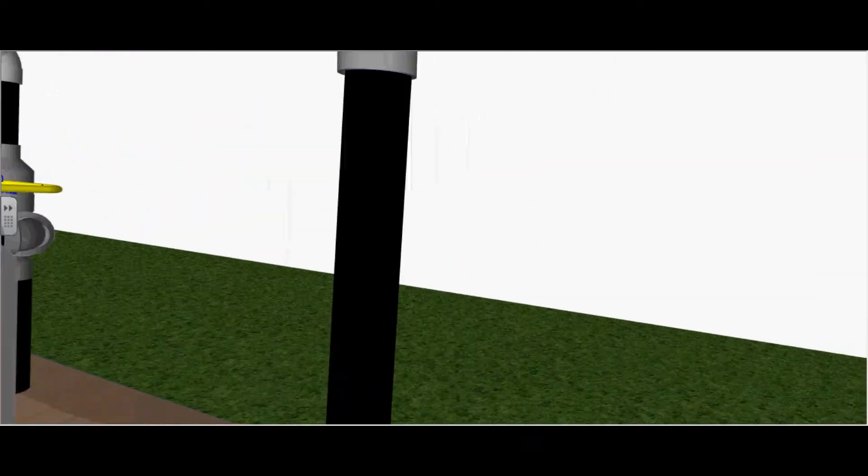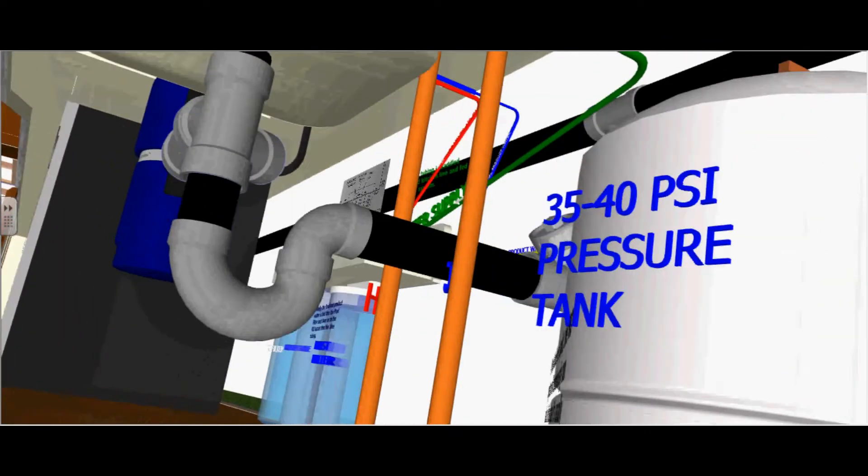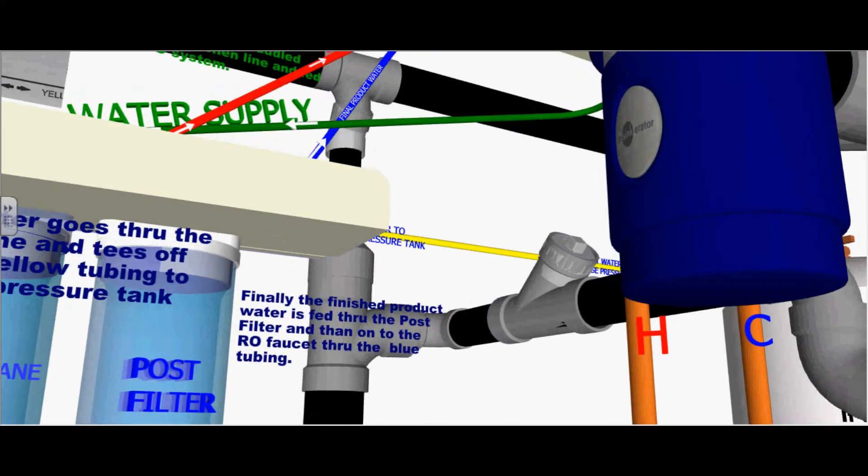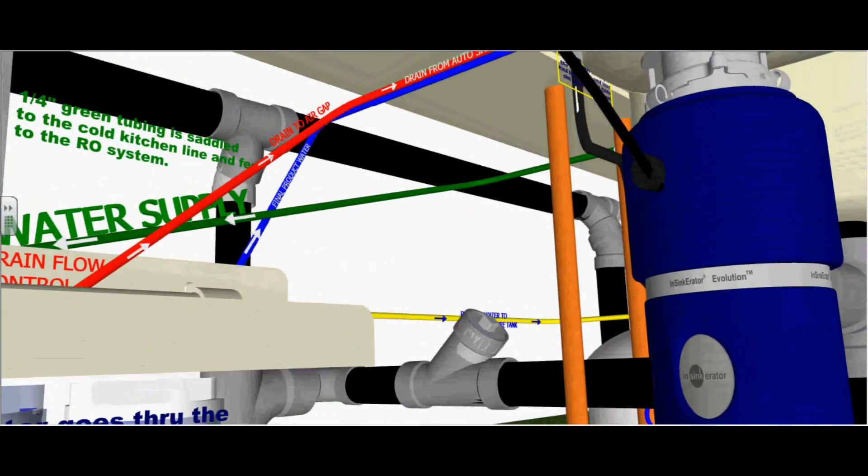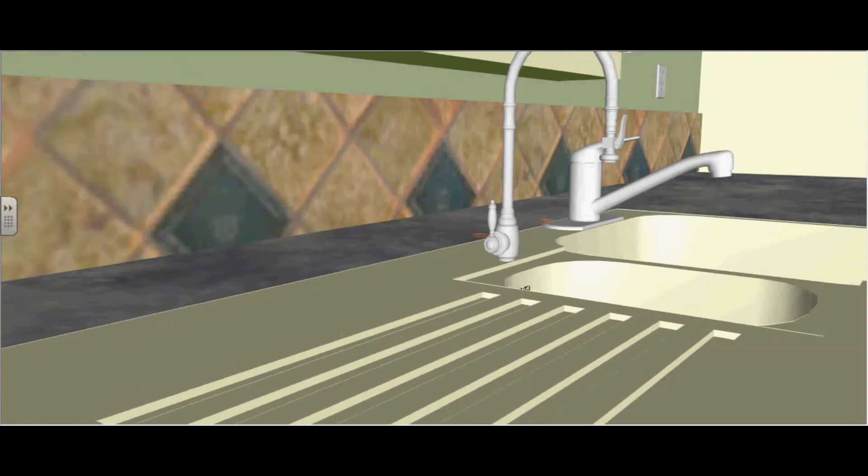There you see the Schrader valve on the tank. Let's turn around and follow the final blue piping, which is our final product of RO water. Finally, the finished product water is fed through the post filter and then onto the RO faucet through the blue tubing. As you can see, it feeds up through the blue tubing and into the RO faucet located on top of the sink.